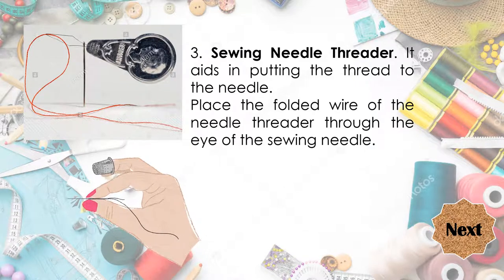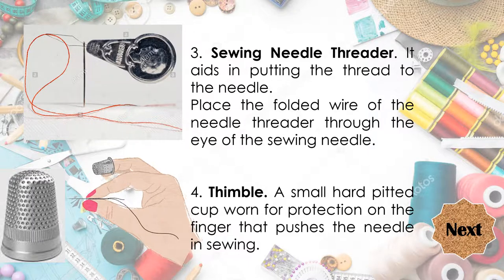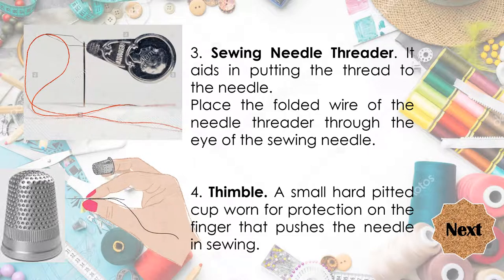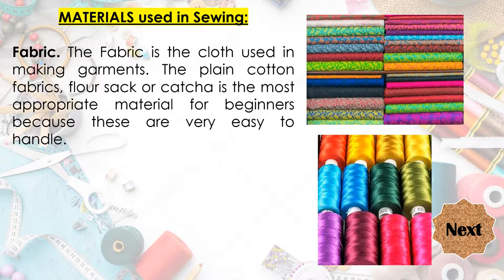The next sewing tool is the thimble. It is a small hard pitted cup worn for protection on the finger that pushes the needle in sewing, so it will protect your finger from pricking while you are sewing. These are the materials used in sewing. The first one is the fabric — the cloth used in making garments. Plain cotton fabrics, flour sack or kachaan, are the most appropriate material for beginners because they are very easy to handle and very affordable.